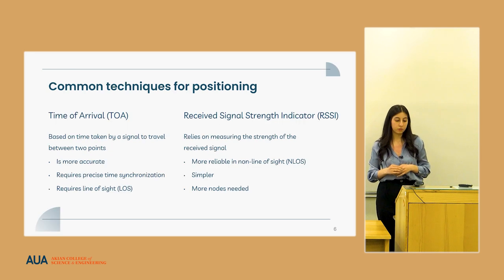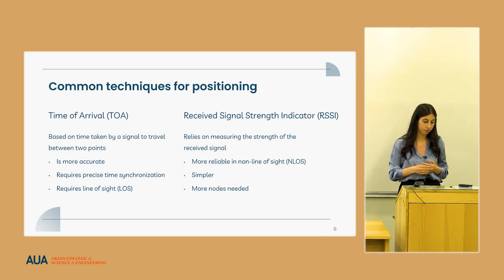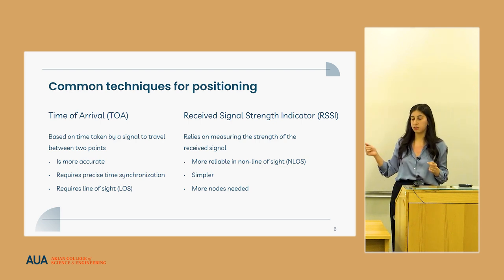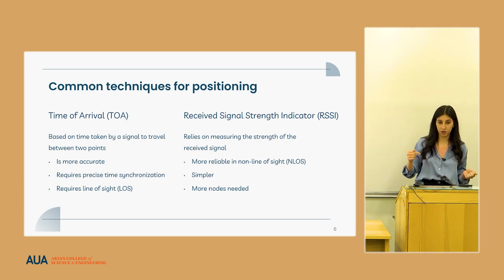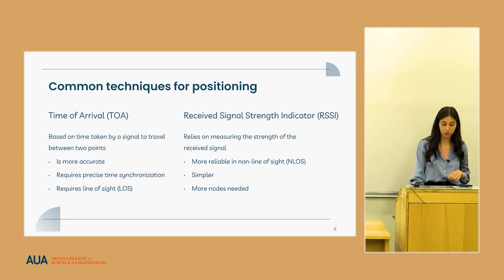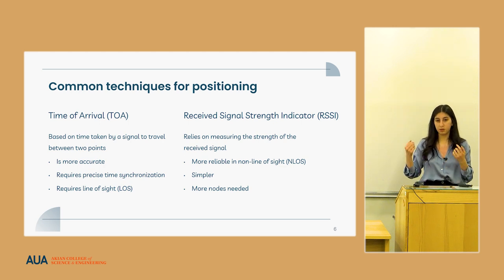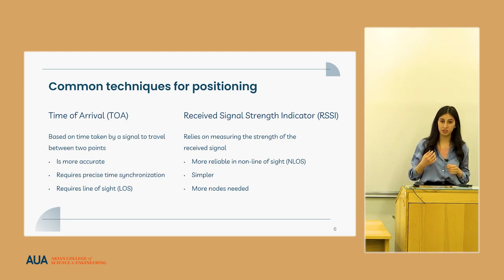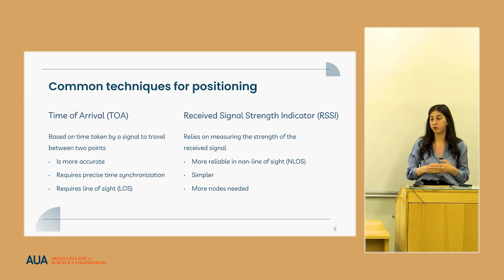Moving forward, the most used technique is the time of arrival method, which is used by GPS. It measures the distance between signal nodes and target by correlating the travel time to distance. Another method is RSSI-based, which measures received signal strength and correlates it to distance. Time of arrival is generally more accurate than RSSI-based positioning; however, it requires more synchronization, is more complex, and can perform worse than RSSI in non-line-of-sight environments.